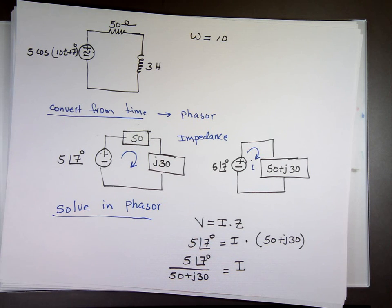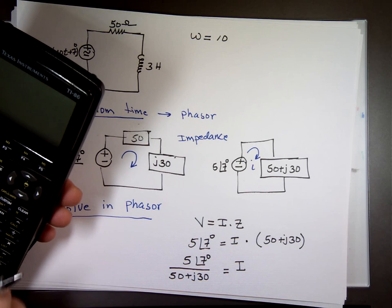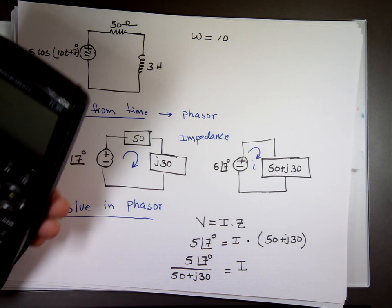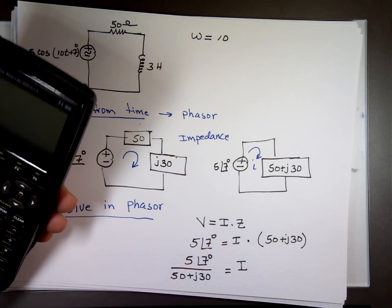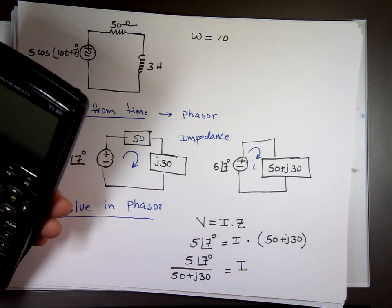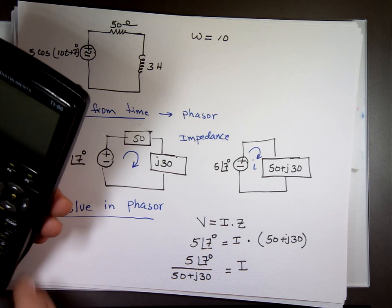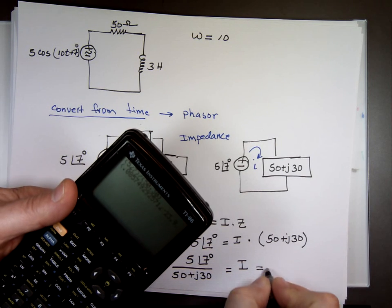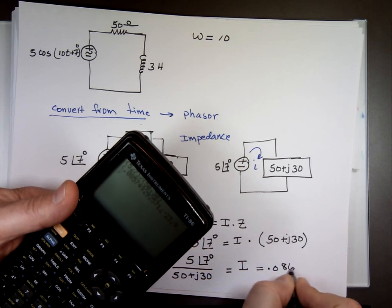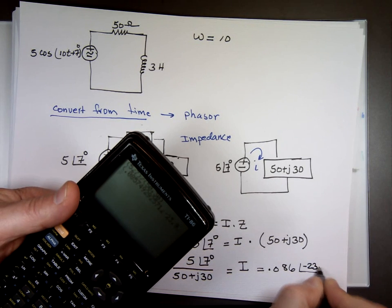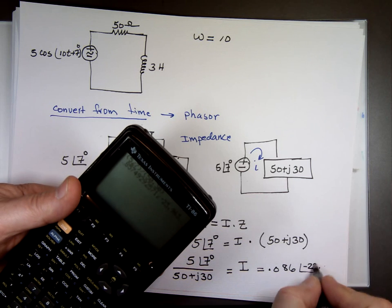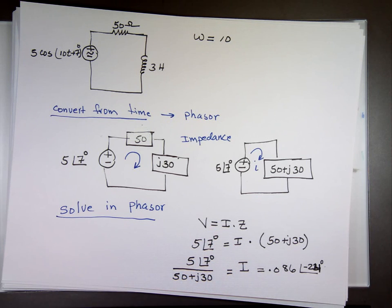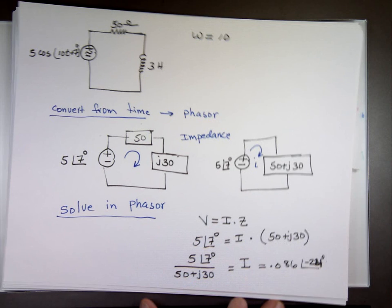Where's my calculator? 5 angle 7 divided. My calculator, I actually can mix and match modes. Thank goodness. 50 comma 30. I don't know if I have to put j or not. I think I'm okay. And my calculator gave me an answer of 0.086 angle negative 23.9 degrees. Almost 24. I'll go 24 degrees. 23.96. What's the third step? Put it back to time. Change it back to time.